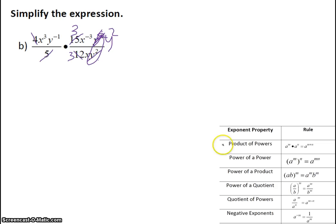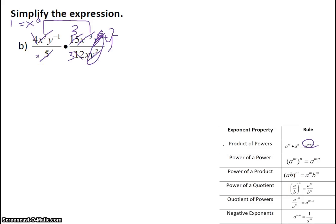The next thing you can do is apply the product of powers property, where you have x cubed and x to the minus 3. They both have the same base of x, and I'm multiplying them, so you add your exponents. And 3 minus 3 is 0, so it ends up being x to the 0, and x to the 0 is 1. Another way to think about it: x to the minus 3 is a negative exponent, so you can bring it down to the denominator, where it becomes x cubed, canceling with x cubed on the top.